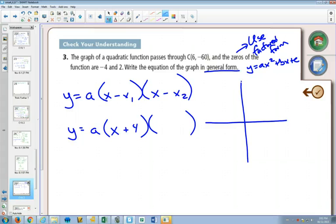In order to get -4 as an x-intercept, and in order to get an x-intercept or a zero of 2, this one would need to be (x - 2).